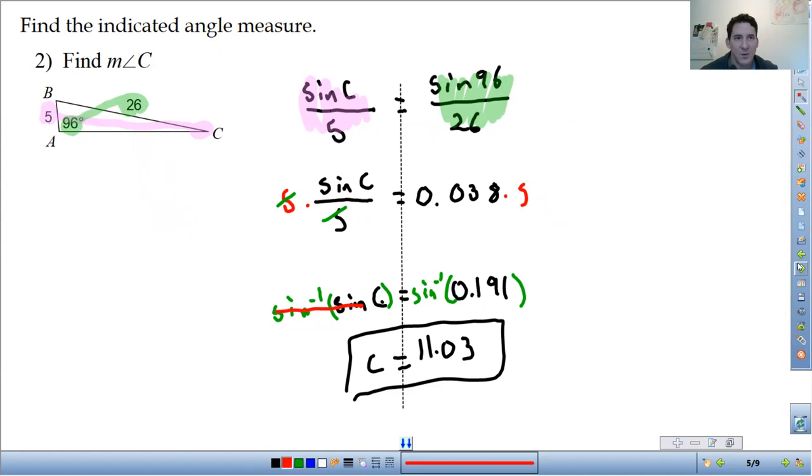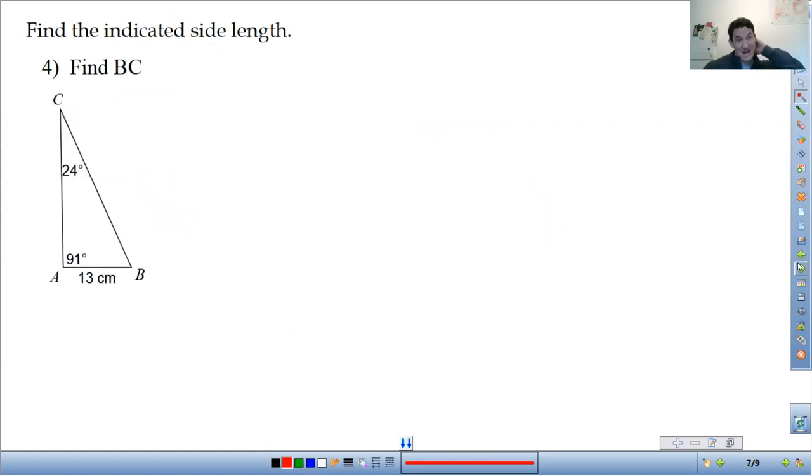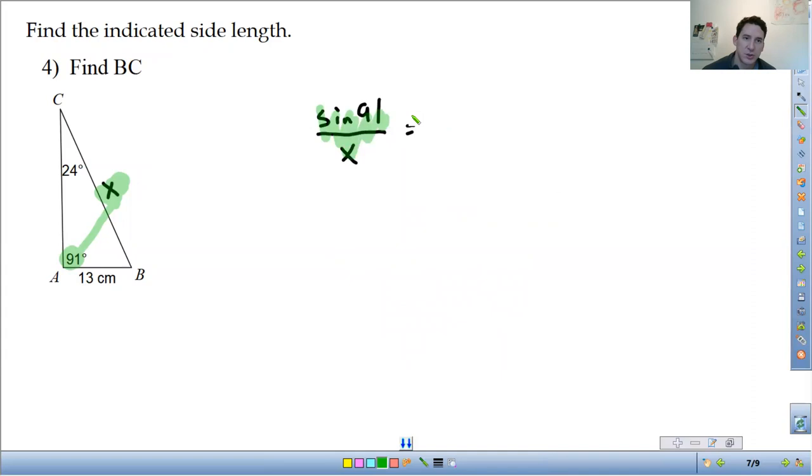Find BC, so that's the length of side BC. So B to C is this side here. So we are looking for this. So you set it up the same way, the angle and the side across from it. This is what we're looking for, so I'm going to do sine of 91 over X is equal to, so that's this here. 24 is this angle here, and the side across from it is 13, so sine of 24 over 13. So that is this one here.